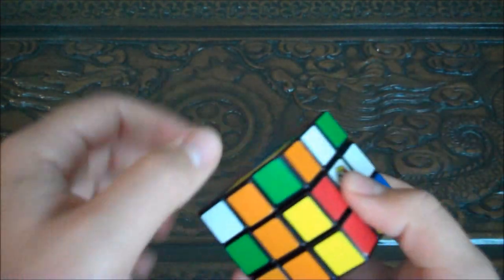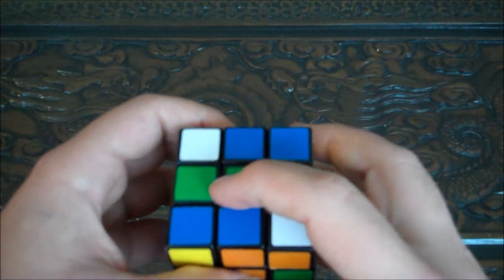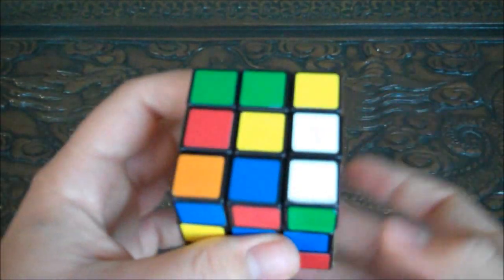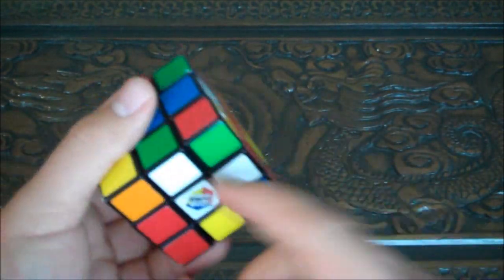You can make any opposite sides top and bottom. So you can make red the top and orange bottom, or green top and blue bottom. It doesn't matter. But for this video, we're going to use white and yellow. Yellow is our top, white is our bottom.